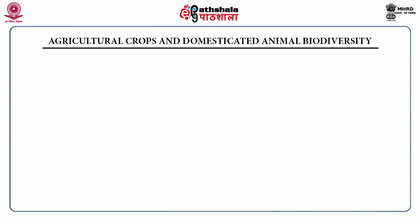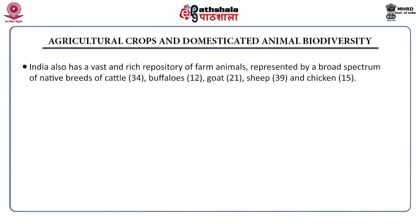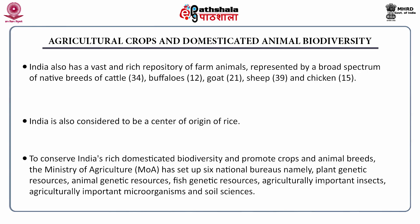Agricultural crops and domesticated animal biodiversity also has a vast and rich repository. This is represented by native breeds of cattle — about 34, buffalo about 12, goats 21, sheep 39 and chicken 15. India is also considered a center of origin of rice. To conserve India's rich domesticated biodiversity, the Ministry of Agriculture has set up six national bureaus: plant genetic resources, animal genetic resources, fish genetic resources, agriculturally important insects, agriculturally important microorganisms, and soil sciences.